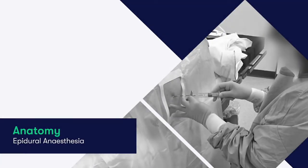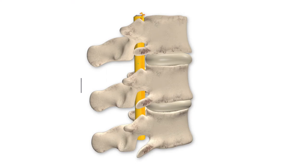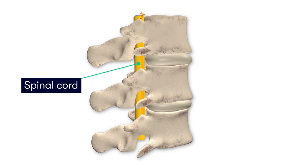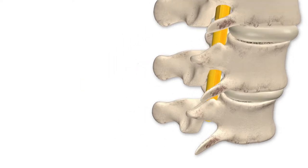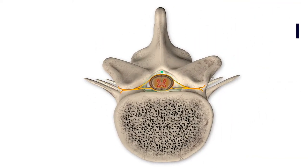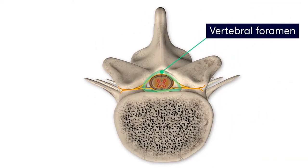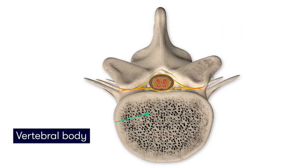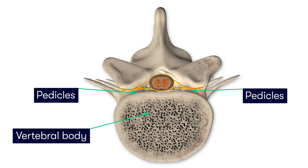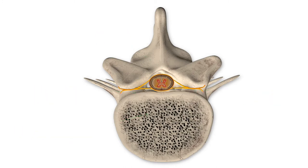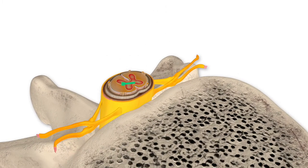Let's remind ourselves of some key anatomy. The spinal cord is located within the spinal canal, or the vertebral foramen, which is created by the vertebral body anteriorly, the pedicles laterally, and then posteriorly we have the lamina of the vertebrae. Within the spinal canal, the spinal cord is further protected by its meningeal layers.